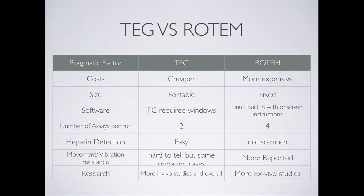Another advantage of TEG's software is that I can have multiple clients to one server — the TEG machine connected to one PC, with three or four other PCs accessing the same network, letting me view results remotely from anywhere within our intranet. ROTEM relies on Linux with on-screen instructions; it's harder to use, more finicky, and you can't build a software bridge — results have to be manually entered afterward by the technician, which is prone to error and leads to delays in transmittal. TEG also has built-in functionality to detect heparin in the sample; ROTEM requires you to read the fine print yourself.